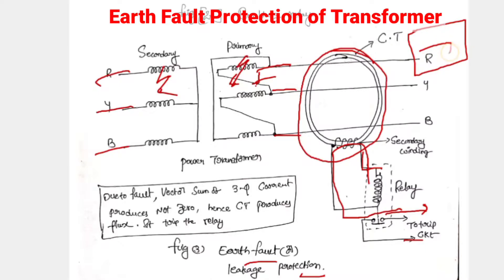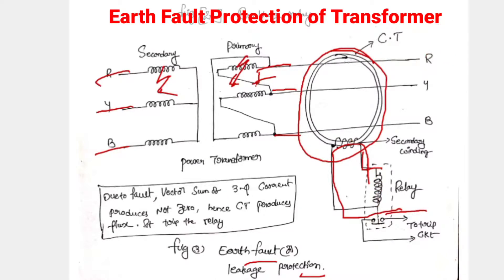If any fault occurs, due to the vector sum of three-phase currents being non-zero, the CT produces a flux. The CT secondary having this flux will cause a current to flow through the relay coil. Due to flux in the CT, a voltage or current is produced in the secondary winding, which flows through the relay coil. The CT detects the earth fault or winding fault before it becomes dangerous and operates the relay coil.